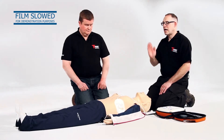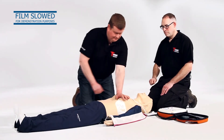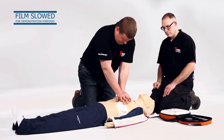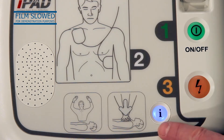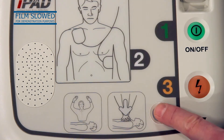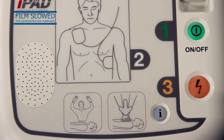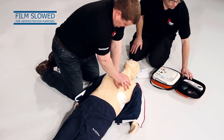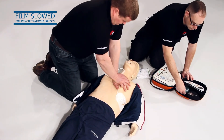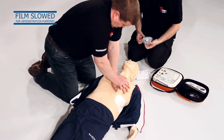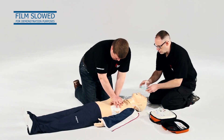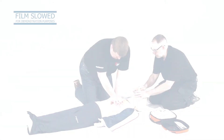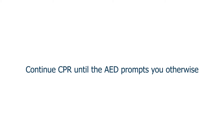Immediately after a shock has been delivered, recommence CPR at a ratio of 30 compressions to 2 breaths. Where possible, use the AED's built-in CPR voice prompts and metronome to ensure the correct speed of compressions and ratio of CPR. Continue CPR until the AED prompts you to stop — this is usually about 2 minutes.